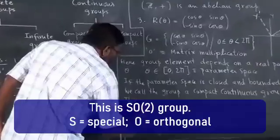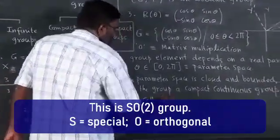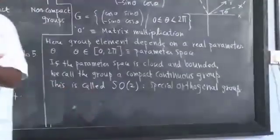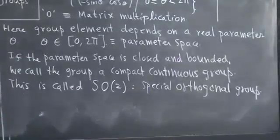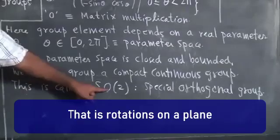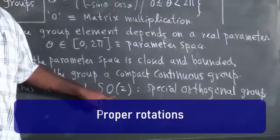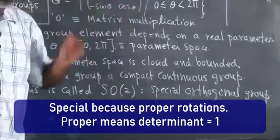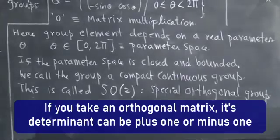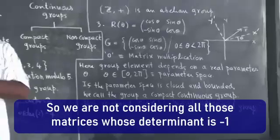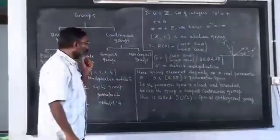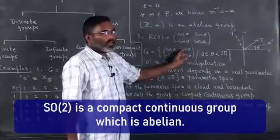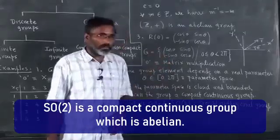This group is called SO(2) — Special Orthogonal group. The word 'special' refers to proper rotations, which have the property that the determinant of the matrix equals 1. An orthogonal matrix can have determinant +1 or −1; we consider only those with determinant +1. SO(2) is a compact continuous group which is also abelian.